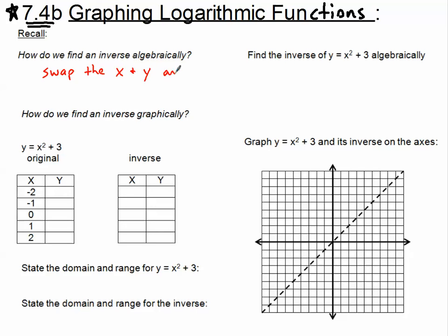And then either graph that, if we're looking at ordered pairs, or solve for the new y to find the inverse. So if we wanted to find the inverse of y equals x squared plus 3, this is one of the parabolas we've explored before. The first thing we would do is switch the x and the y, so y becomes x and x becomes y.